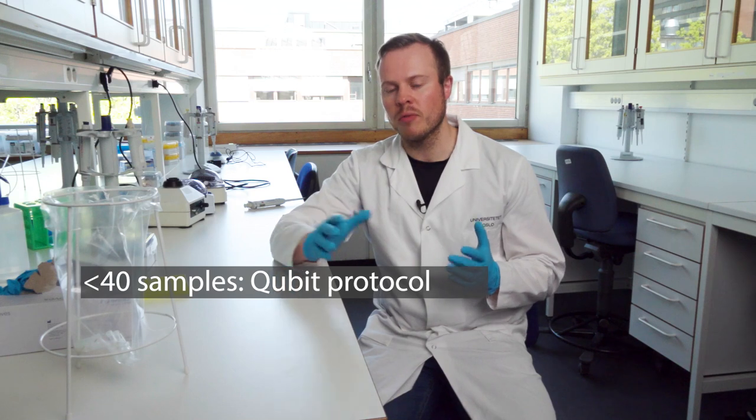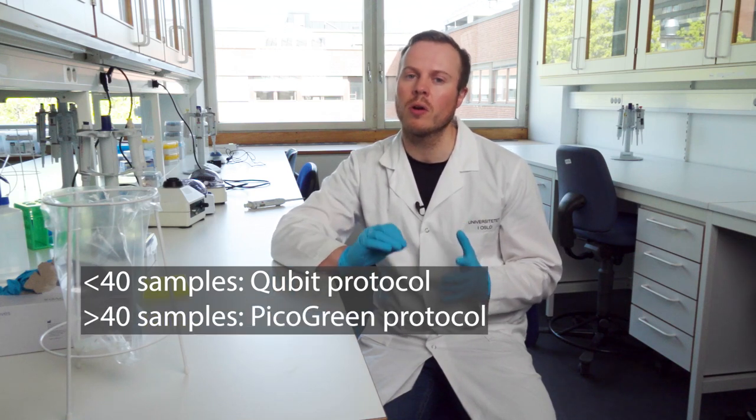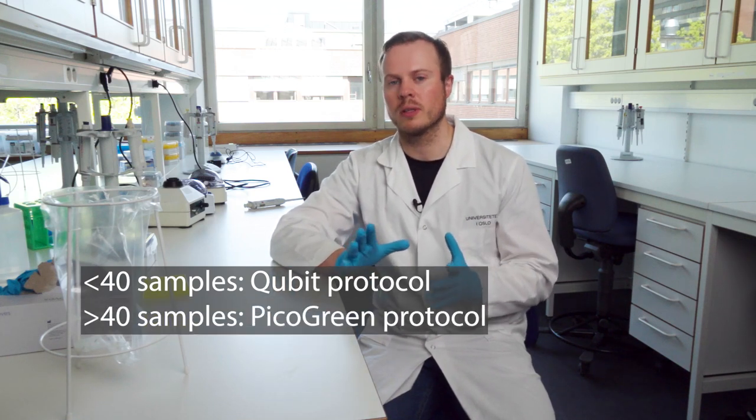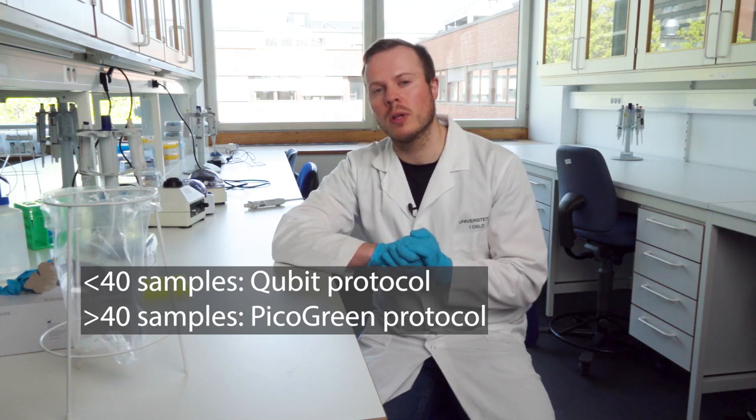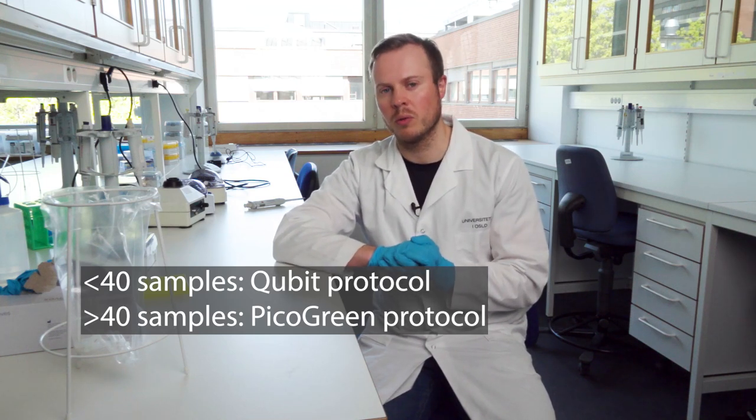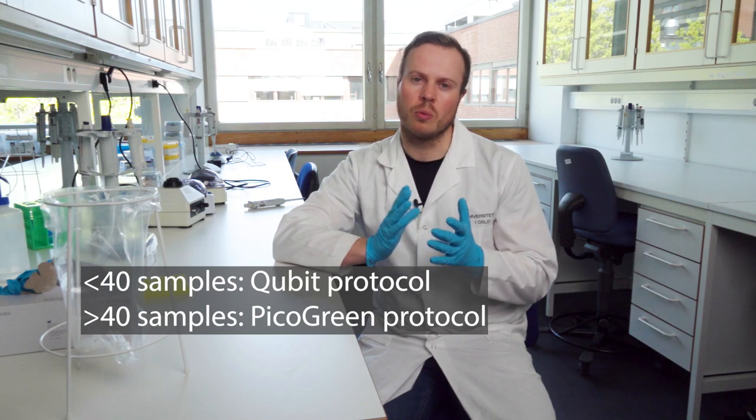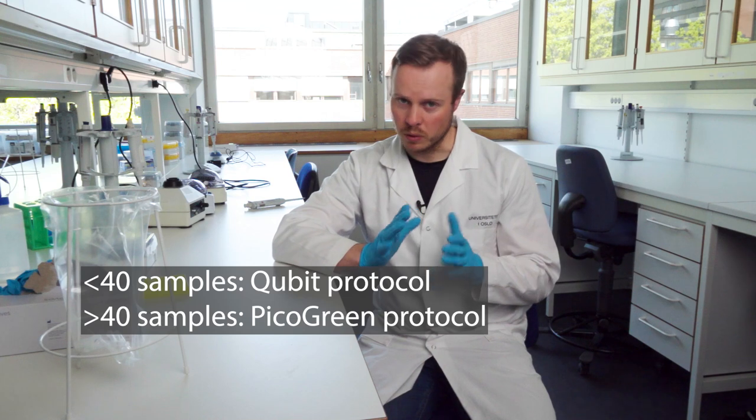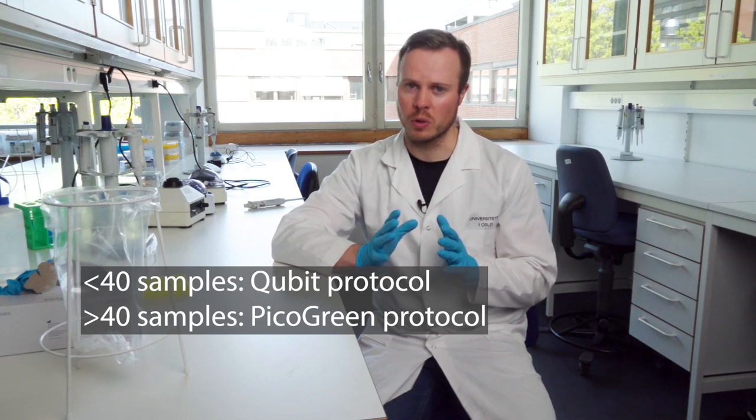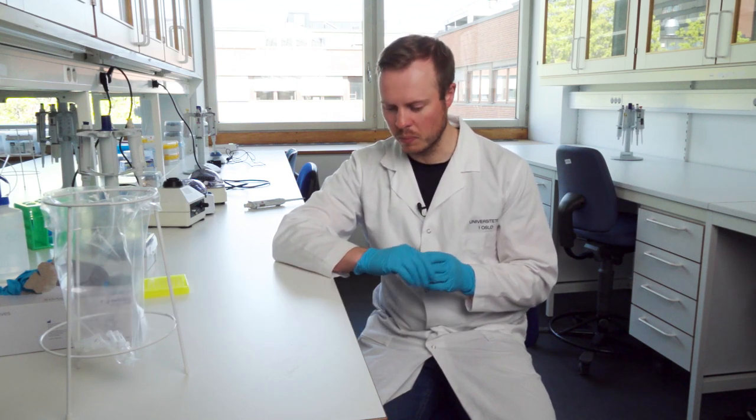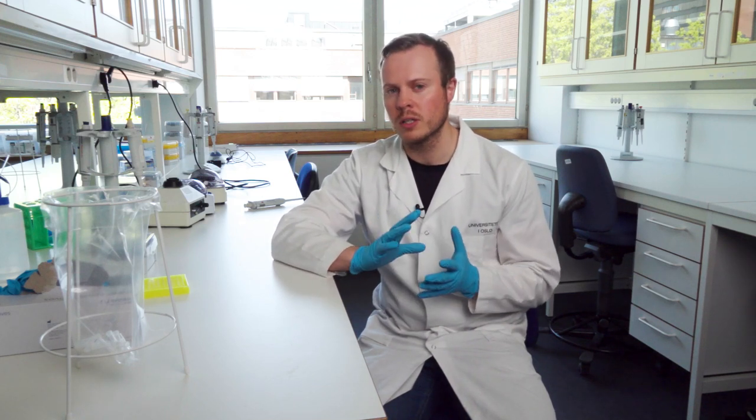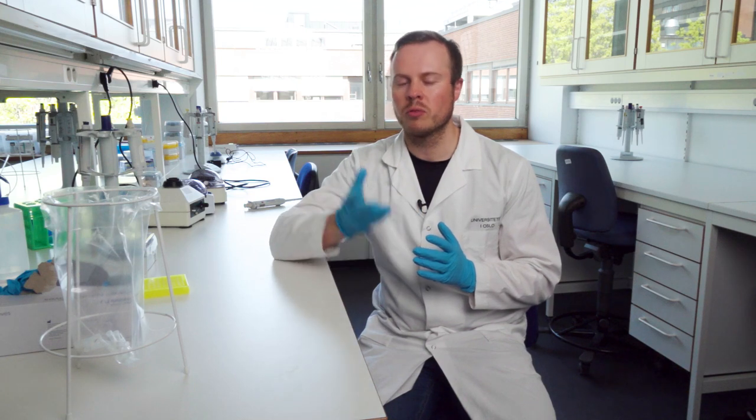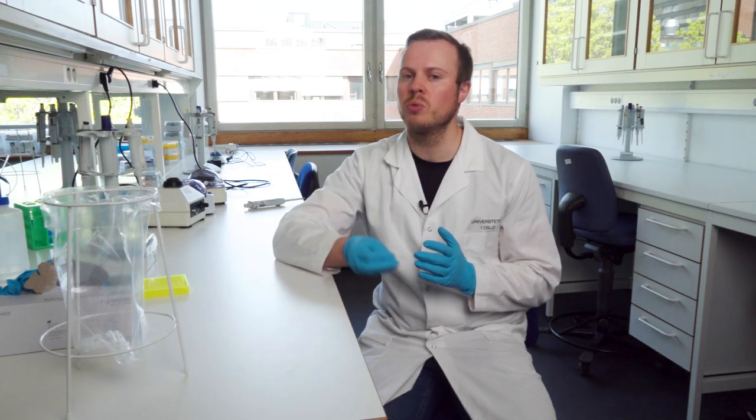If you have more than 40 samples, then I strongly recommend the PicoGreen setup. And here I will explain the PicoGreen more in detail because that's the one that is a little bit more complicated, even though the protocol is quite okay to understand when you look it up in the Dropbox. But how it works is that we use different reagents to bind fluorescence particles to the DNA and then measure the amount of light when it has been irradiated with light in a special machine.